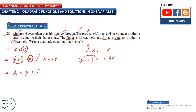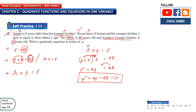Now expand. P times P gives P², and 4 times P gives 4P, so P² + 4P = 48. To write it as a quadratic equation, bring 48 over: P² + 4P − 48 = 0. In the form ax² + bx + c = 0: A is 1, B is 4, and C is negative 48. This is the final equation.